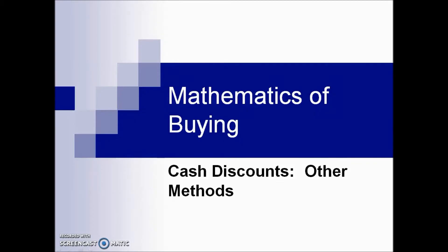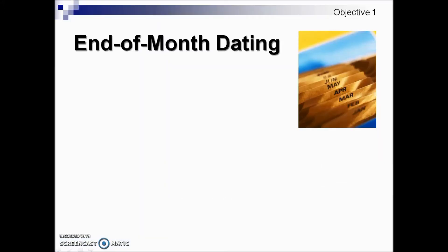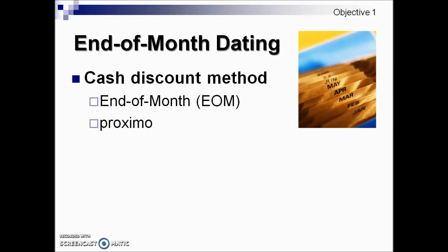In this section we're going to take a look at cash discounts using other methods than the ordinary dating method. The first type we're going to look at are problems with EOM dating, short for end of month dating. This extends the period for cash discount eligibility. It is abbreviated EOM, and it can also be stated with the term Proximo.